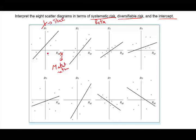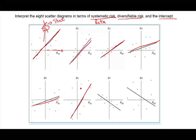So how do we interpret the beta from the graph? The steeper the line, the larger is the beta. Let's look at whether the beta is positive or negative. For R1, as the market rate goes up, the stock price goes up — that's a positive relationship. Same thing with R2 and R3: positive relationship. Beta is positive for all of those. Now if we go to R7, we notice that beta is negative. It means there's a negative relationship between the market and this stock price.